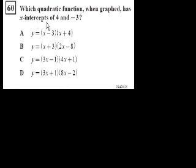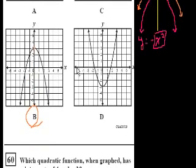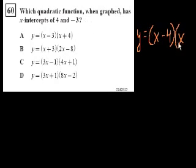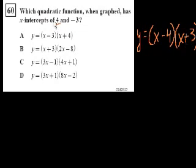Problem 60. Which quadratic function, when graphed, has x-intercepts of 4 and minus 3? x-intercepts of 4 and minus 3 means that when you substitute either of those x values into the equation, you get y equals 0 — because when y equals 0, you're at the x-intercepts. So how do we set up an equation where putting in one of these numbers gives 0? Well, if I make it the product of (x minus the first root) times (x minus the second root): (x minus 4) times (x minus minus 3), which is x plus 3.